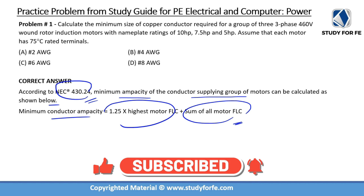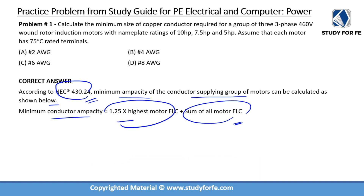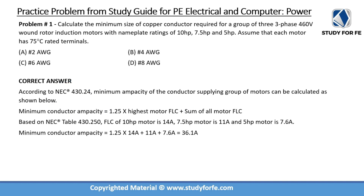As you can see over here, all we need to do is take 1.25 times the highest motor FLC and then simply add the FLC of all the remaining motors. Based on NEC table 430.250 — these are the tables we discussed under part 14 of article 430 — we are dealing with a three-phase application.